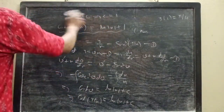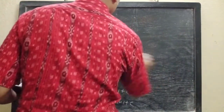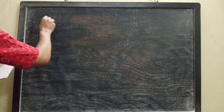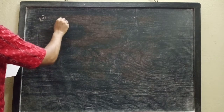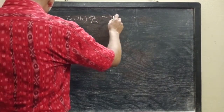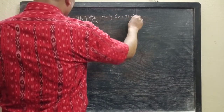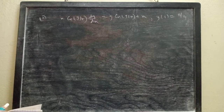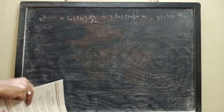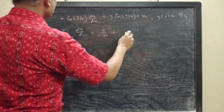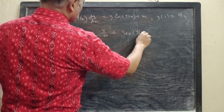Next, let us move to question 10. The equation is: x·cos(y/x)·(dy/dx) equals y·cos(y/x) plus x. The initial condition is y(1) equals π/4. From this we write dy/dx in terms of y/x. Let this be equation 1.